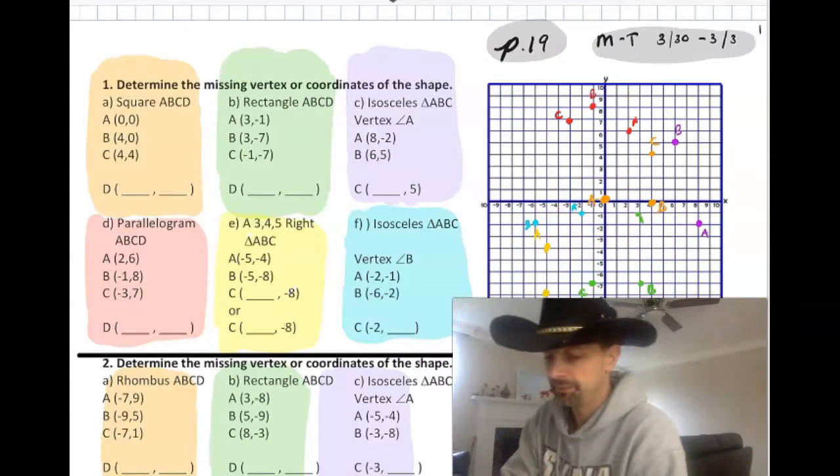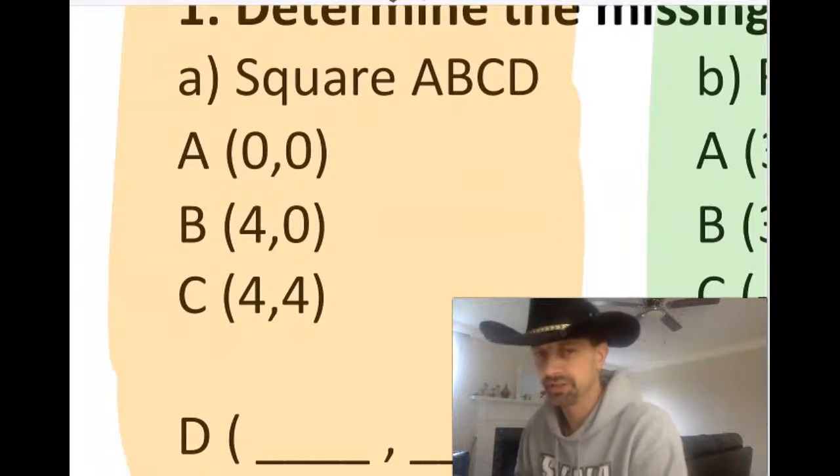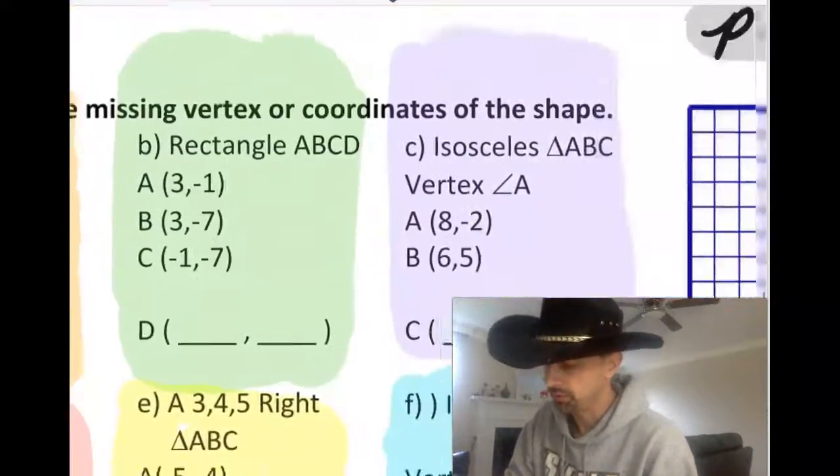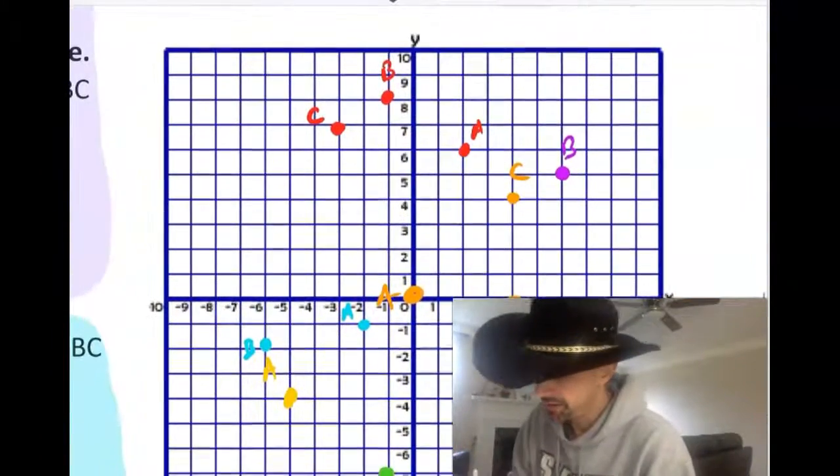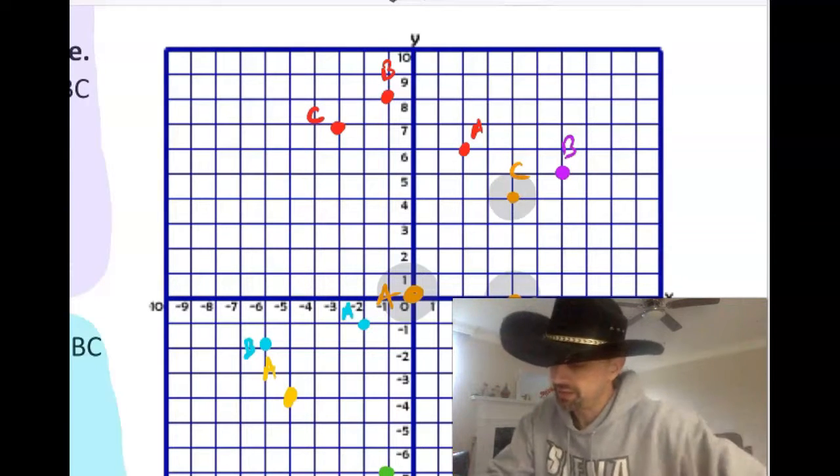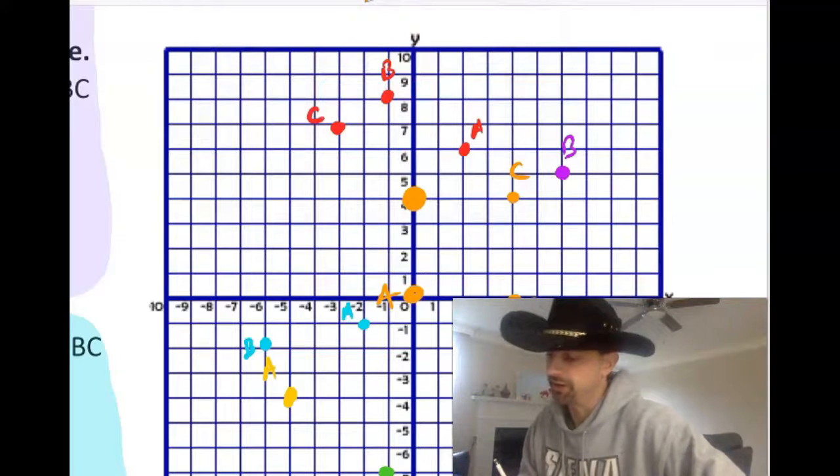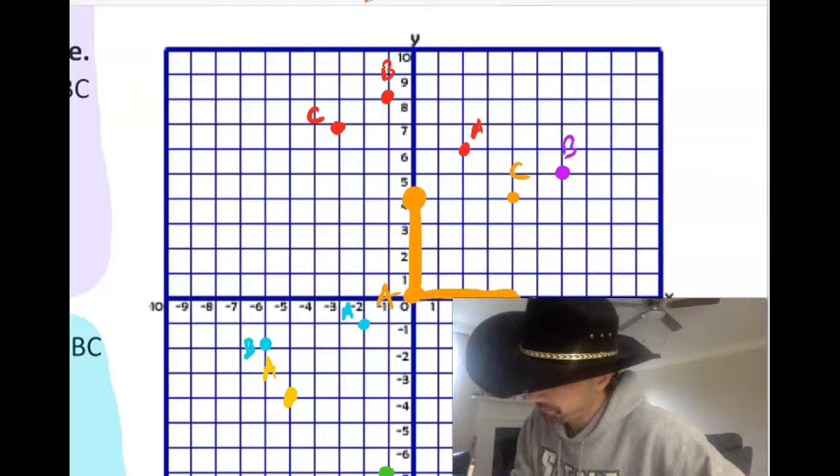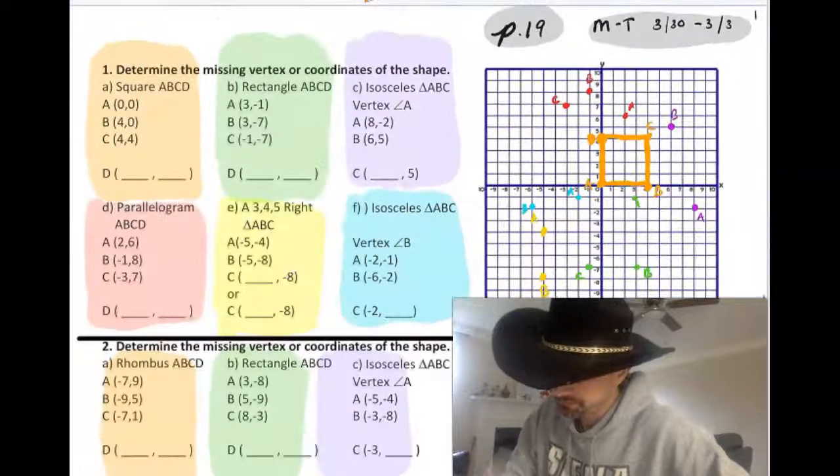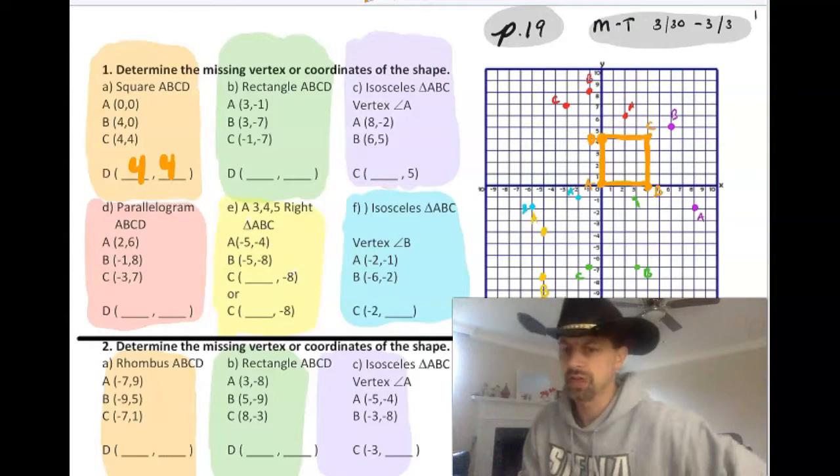So I got them started just to save us some time. So the square, it gives us three vertices: 0,0, 4,0, and 4,4. We're looking for the fourth one. So I plotted 0,0, 4,0, and 4,4. So based on that, you can pretty much tell that the fourth point would have to be right there. And that point is 4,4. Not too bad on that one, right? Nice straight vertical and horizontal square.